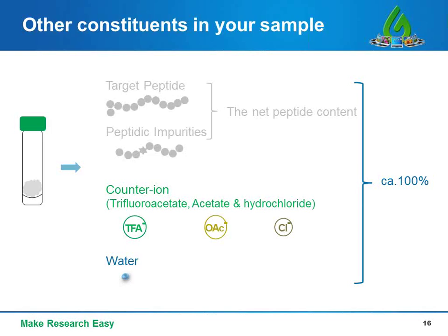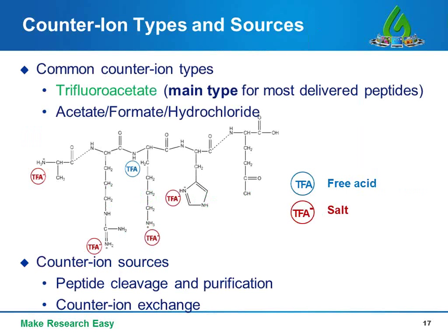Moving on to other contaminations in your peptide sample: counter ions such as trifluoroacetate, acetate, and hydrochloride. Counter ions result from the protonation of all basic groups during peptide production. The most common form is trifluoroacetate, the conjugate base of trifluoroacetic acid, abbreviated as TFA. It comes from the peptide cleavage and purification stage, where TFA is widely used for cleavage of protecting groups and as the mobile phase for preparative HPLC. Without special requests, all custom peptides are delivered in trifluoroacetate form.